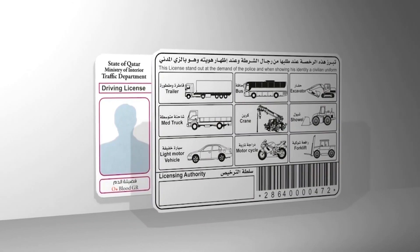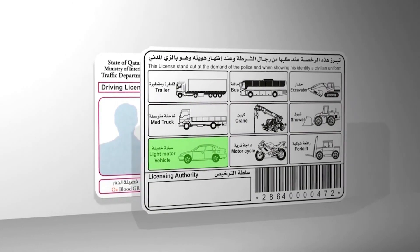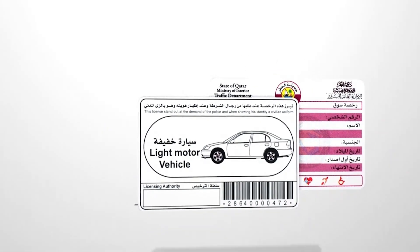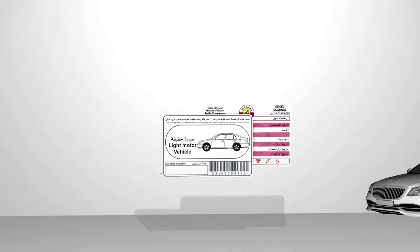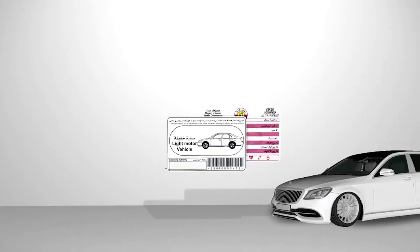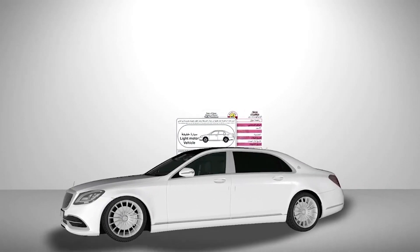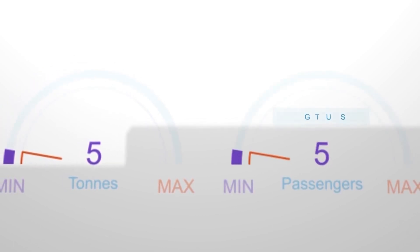Light Motor Vehicle Driving License: authorizes its holder to drive different types of private light motor vehicles, private transport vehicle of total weight not exceeding 5 tons, and light buses with a passenger capacity not exceeding 25 passengers.